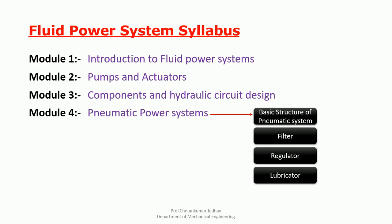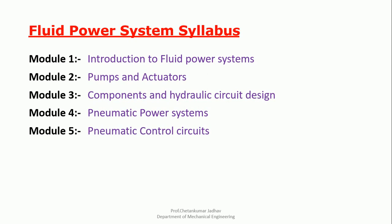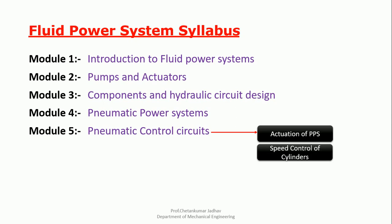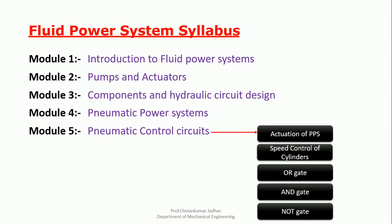In module 5, Pneumatic control circuits, we are going to study different methods of actuating pneumatic power system. Then speed control of cylinders, supply air throttling and exhaust air throttling. Then we will study signal processing elements like OR gate, AND gate, NOT gate. Finally with the help of these signal processing elements, we are going to build some simple pneumatic circuits.